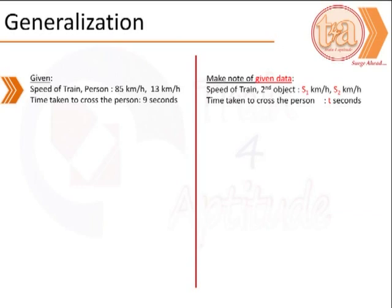Let us now try to generalize it. We begin with first looking at what is given to us: the speed of the train, the speed of the person, and the time taken to overtake.